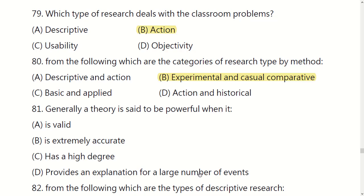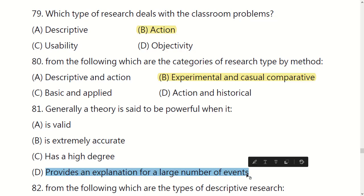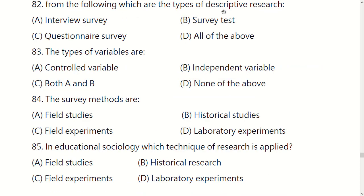The right option is D: provides an explanation for a large number of events. From the following, which are the types of descriptive research? Options are: interview survey, test questionnaire survey, all of the above. The right answer is: all of the above.